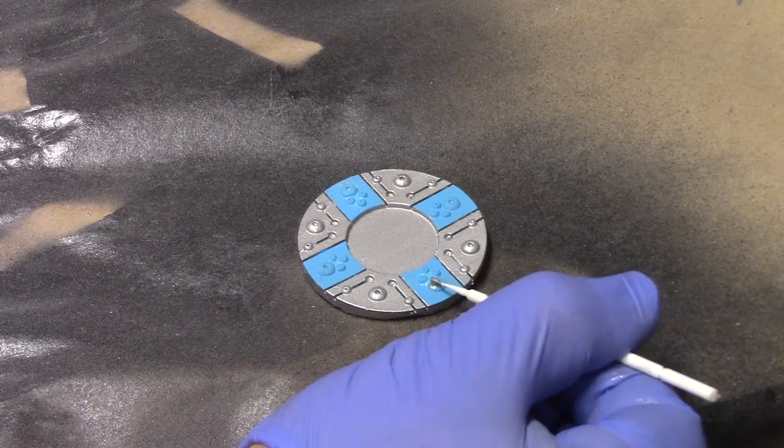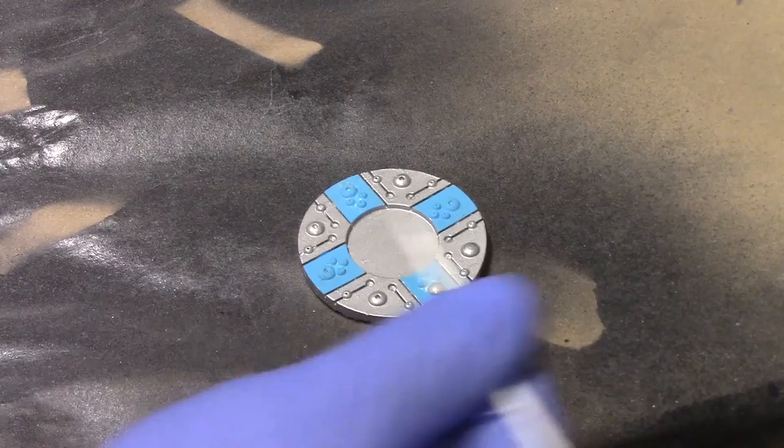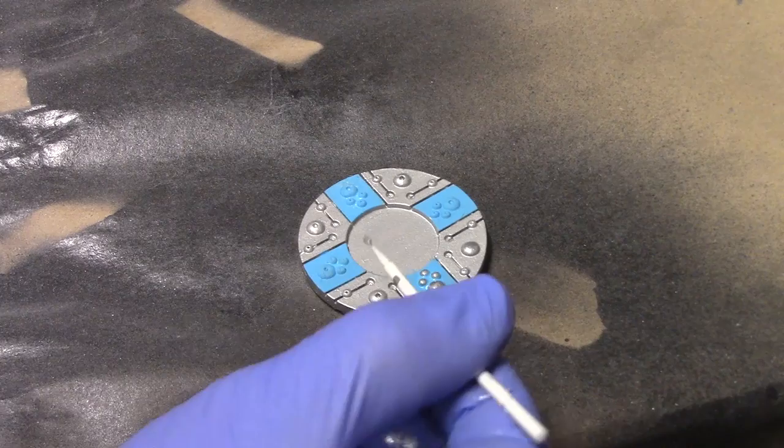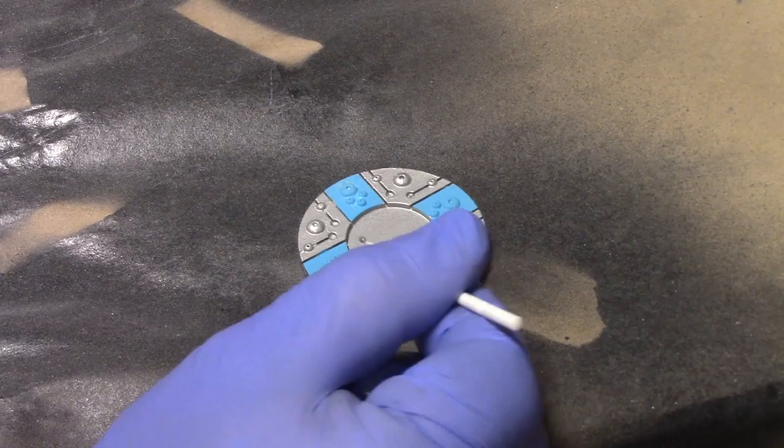Now I'm using silver to touch all these rivets and make them all pop out. I'm using a micro brush and some testers silver to make all these rivets pop.